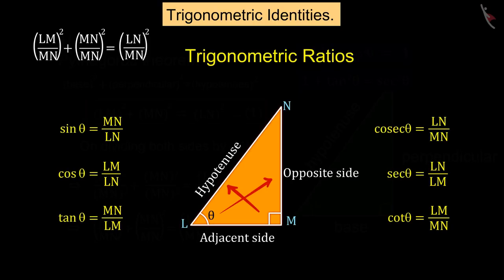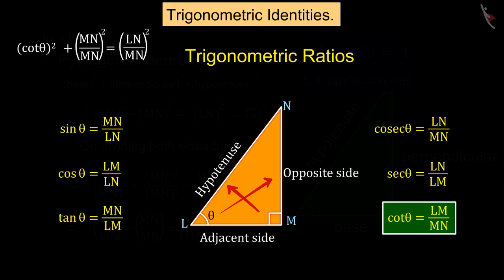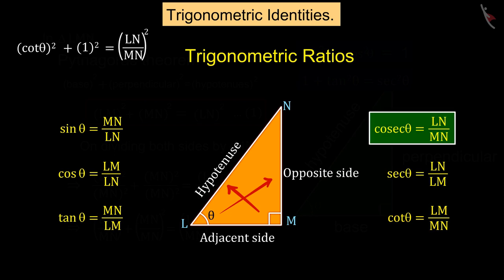With the help of trigonometric ratios we get: LM upon MN equals cot θ, and LN upon MN equals cosec θ, from which we get the value of cosec θ.